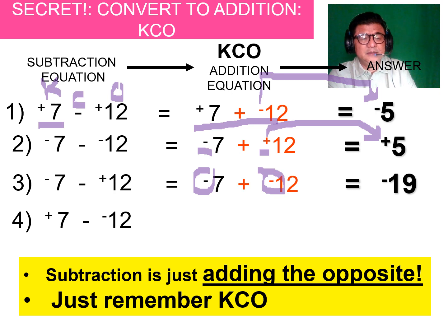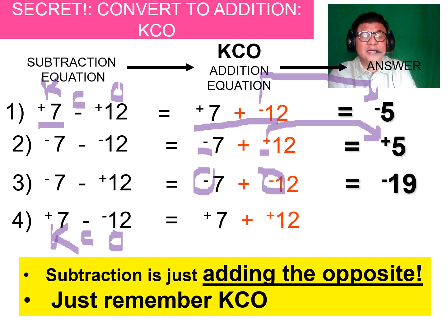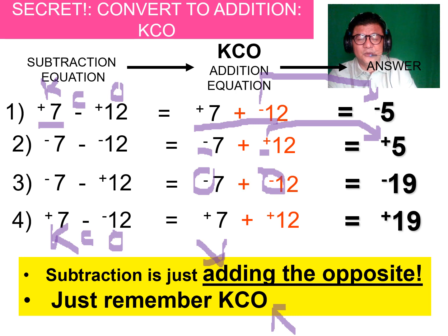How about the last one — 7 minus negative 12? KCO: always write those letters. Rewrite the equation: 7 plus positive 12. They're both positive now, and the answer is positive 19. Remember: subtraction is just adding the opposite, or simply KCO.